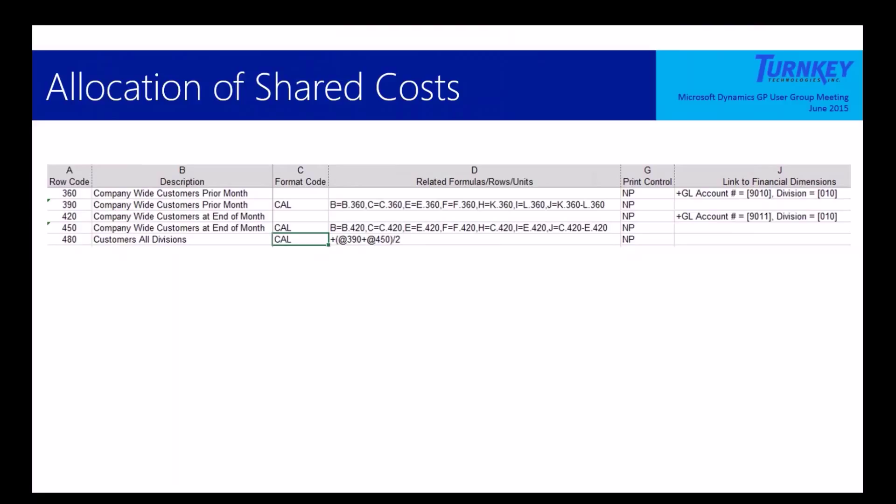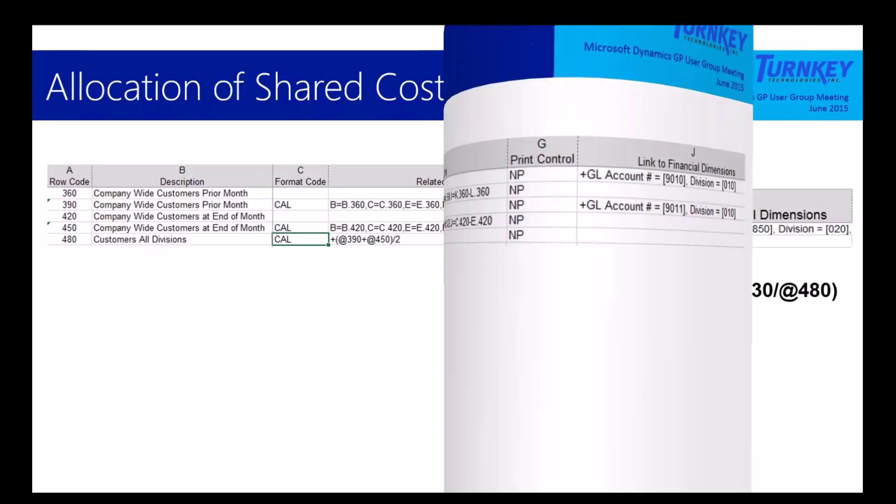10,590 is that row we just commented, which is the total call center expenses. That's going to go get the call center expenses for the whole company. The 330 is that number of customers we saw earlier. Row 330 is the average total customers for the operating unit. So when you're looking at East, it's the average customers for East, that's 30,000. If you're looking at West, it's 20,000. 480, when you're running the P&L, you need to be able to divide it by total customers in the whole company. So I had to create a row to bring that data in as well. That gives me a reference point for total customers.